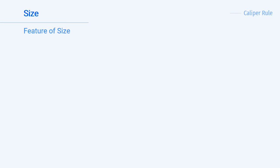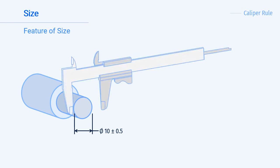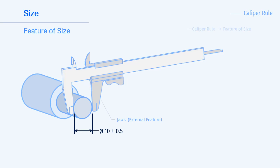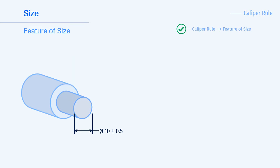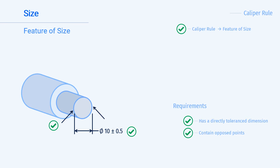Let's try the caliper rule on the three features we looked at earlier, starting with the step shaft. The end of the step shaft is an external feature, and to measure it with a vernier caliper we would use the jaws for measuring external features. The caliper rule says that this is a feature of size. Checking against our requirements: the feature must be directly toleranced, it must have opposing points, and it must have an axis or plane that can be repeatably derived.